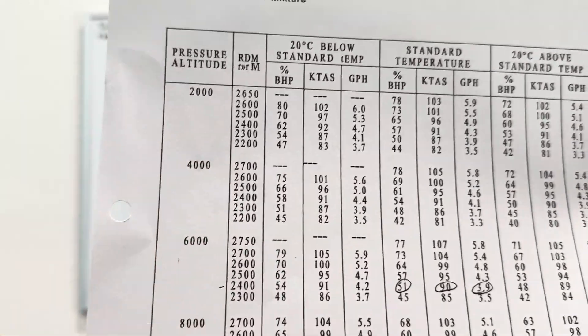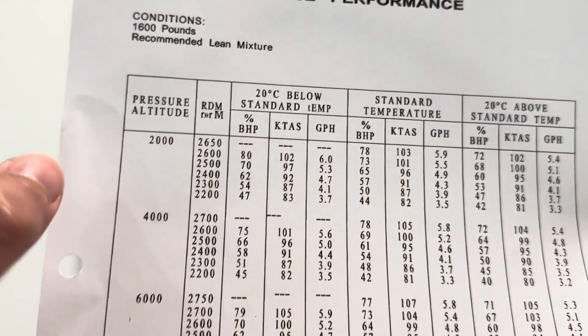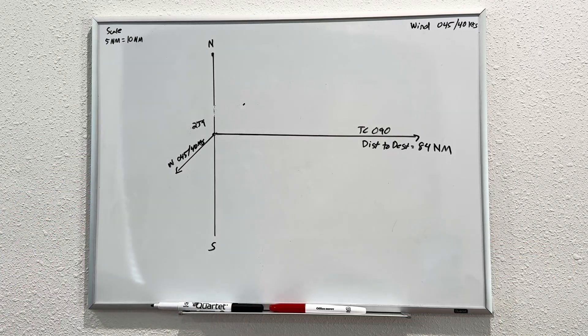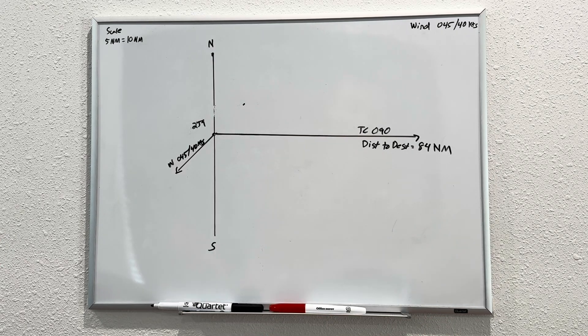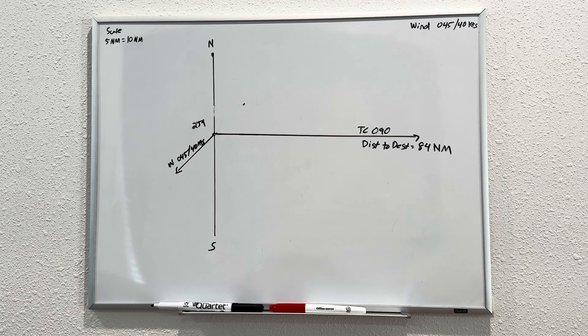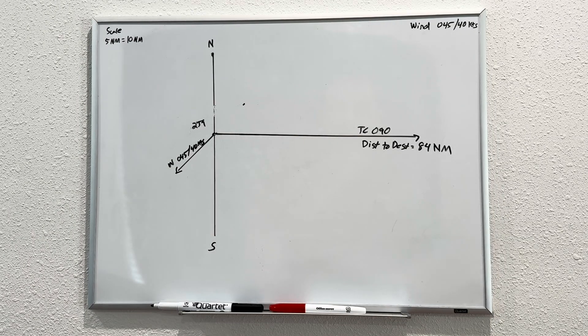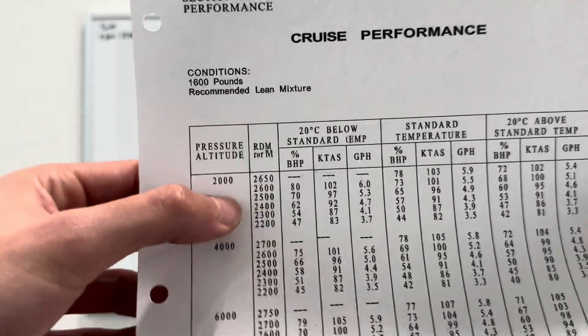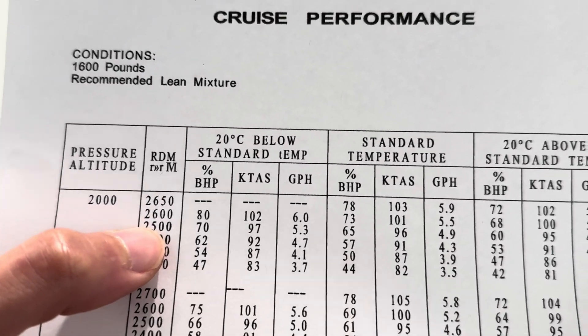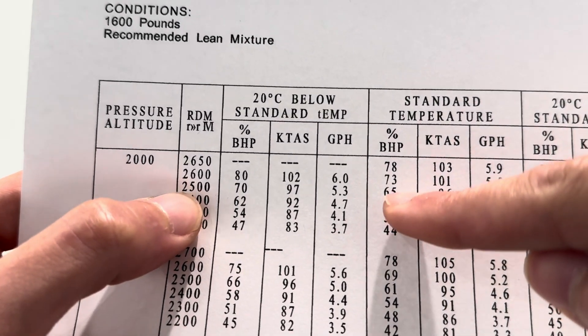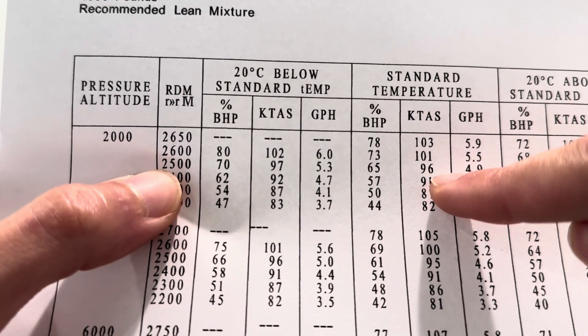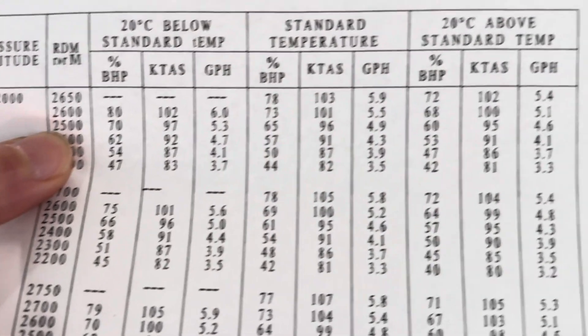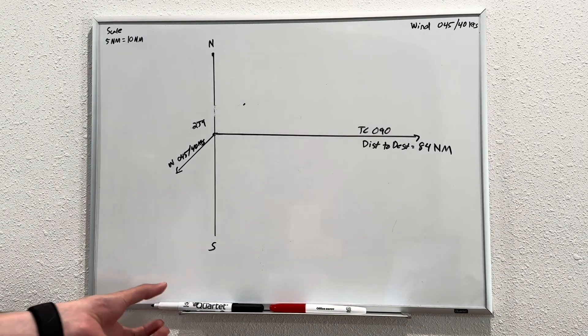This is from the POH. It's a Cessna 150, the Mike model. This is one of our main trainers here at the school. Let's figure out what this means. This is a cruise performance chart. It presents different pressure altitudes, different RPM settings at different temperatures. What is our VFR altitude? What could be one of our VFR altitudes if we were going on a 090 heading, or if we were going east? Well, if you remember, it's anything that's odd, an odd altitude plus 500 feet.